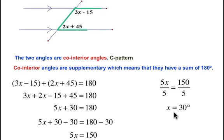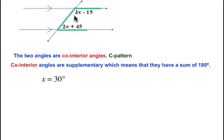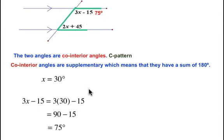When we substitute x = 30 into our first expression, 3x - 15, we get 3 times 30 minus 15, which equals 90 minus 15. So 3x - 15 equals 75 degrees.